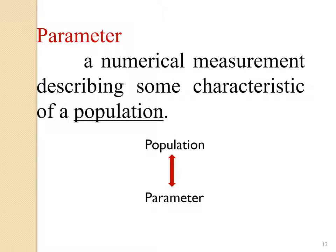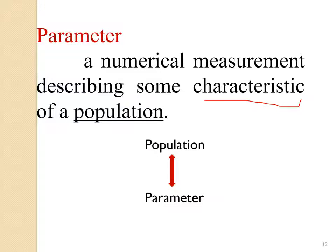A parameter is a numerical measurement describing some characteristic of the population. Characteristics include mean, average, proportion, variance, standard deviation, or range. Population mean, population standard deviation, and population variance are all called parameters. Usually population parameters are fixed but unknown, and we can estimate them from the sample.